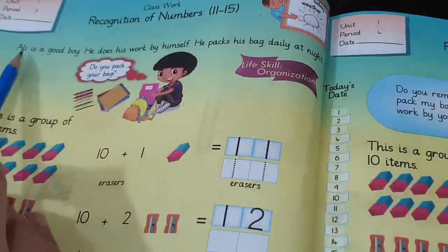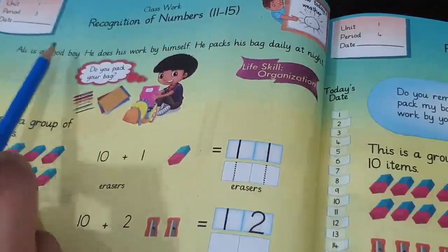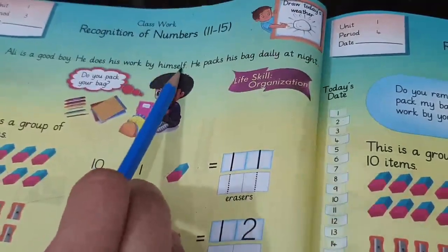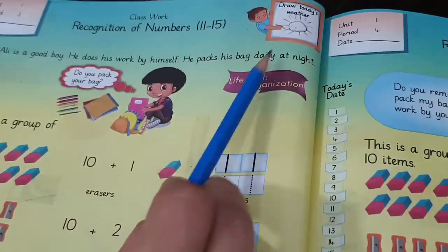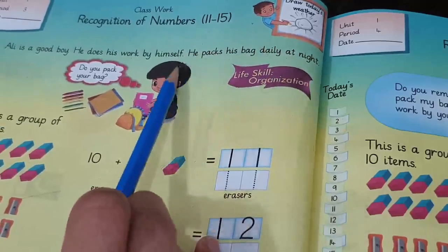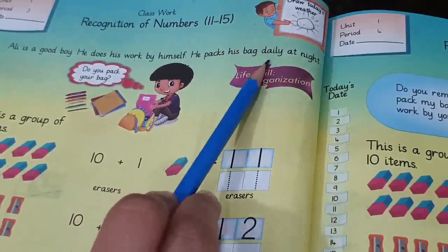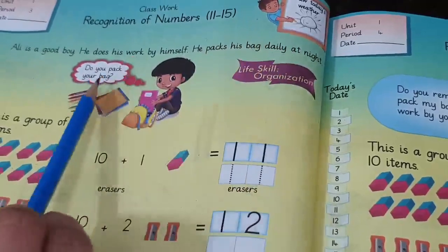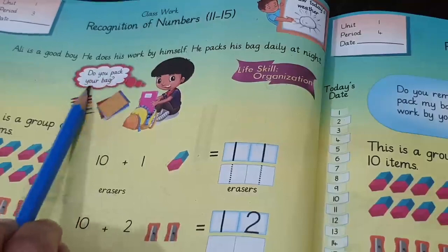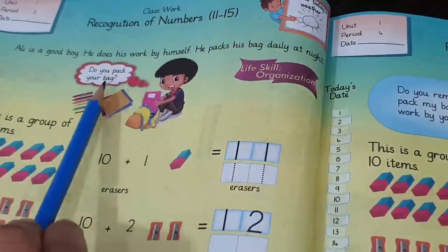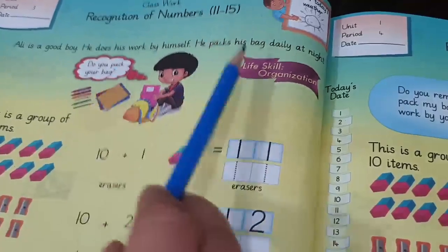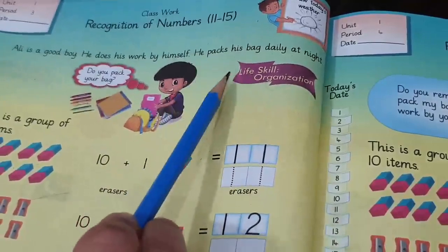Like, what is written here? Ali is a good boy. He does his work by himself. He packs his bag daily at night. That means Ali is a good boy. He used to assemble and organize his bag daily at night. So now you have to tell me, do you pack your bag daily? You should pack your bag daily. Organize your things. This is today's life skill.